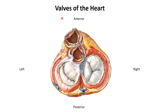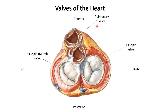The valve on the right was the tricuspid valve, the one on the left was the bicuspid valve and both these valves had two semilunar valves in the middle. The pulmonary trunk was anterior to the aorta and therefore the pulmonary valve is anterior to the aortic valve.